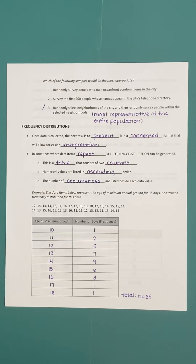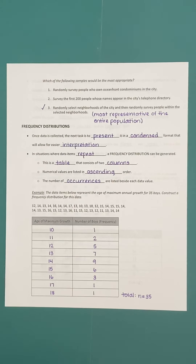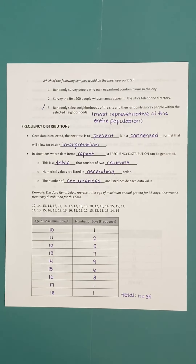Once we select the sample, we administer the survey and collect data from that sample. Now once we have the data, it's important to be able to organize it in a meaningful way. Just looking at individual pieces of data — what we call raw data — is usually not very meaningful. The goal is to take the data we have and organize it so we can readily see patterns and answer the questions we need to answer.